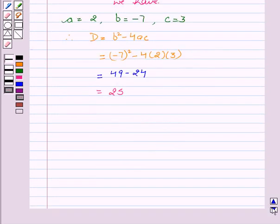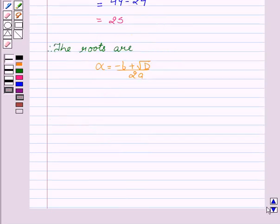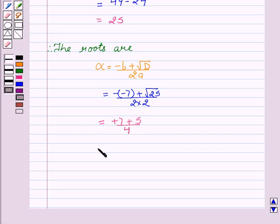Therefore, the roots are alpha equal to minus b plus square root of d by 2a. This can be written as alpha equal to minus of minus 7 plus square root of 25 by 2 into 2, or plus 7 plus 5 upon 4, which gives us 12 upon 4. On cancelling, we get 3.